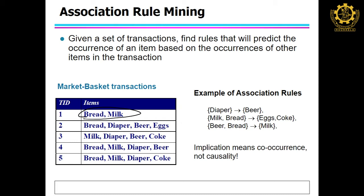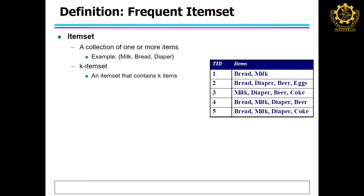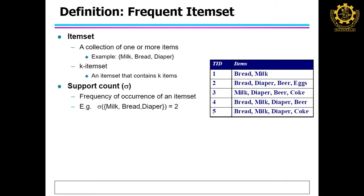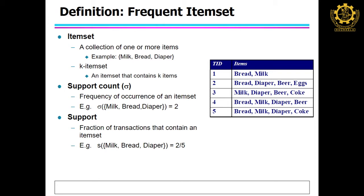The rule can be written as an implication sign. Here we can see diaper is highly related with beer — co-occurrence in many transactions. This is nothing but the cause and effect case — it is a kind of co-occurrence. We defined some terms: an item, a collection of one or more items is called an itemset, and a k-itemset means the itemset length is k. We also defined support: how many times a particular item occurs in all the transactions in the database. Support count is the raw count, and support is the fraction of transactions containing the particular itemset.